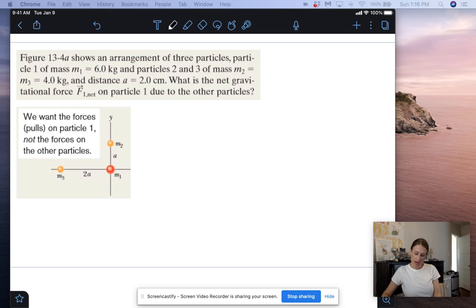All right, so this example we have, our figure shows an arrangement of three particles. Particle 1 of mass m1 equals 6 kilograms, and particles 2 and 3 of mass m2 equals mass m3 equals 4 kilograms, and distance a equals 2 centimeters. What is the net gravitational force on particle 1 due to the other particles?